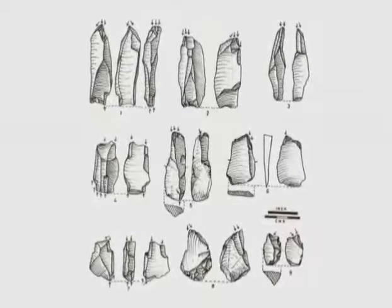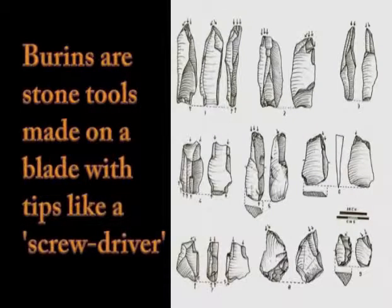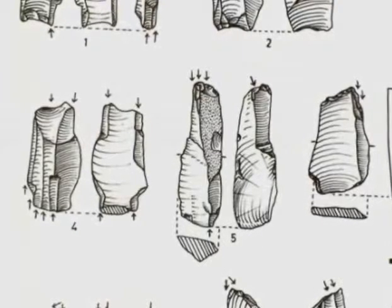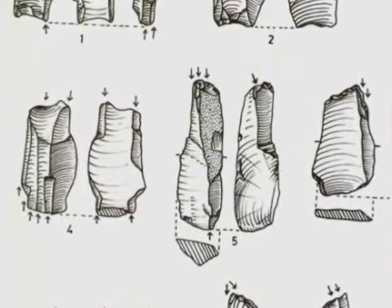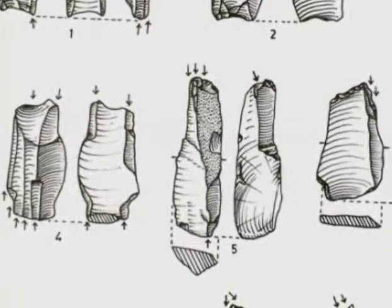These are the burins. You can see that these burins are made from blades and often have more than one burin tip, as shown by these arrows. This was done to give it a chisel-like edge, meant for engraving in bone or wood. So from the tools also we can get an idea of their functions. There is a special technique by which these burins were made, but I am not going into such details right now.